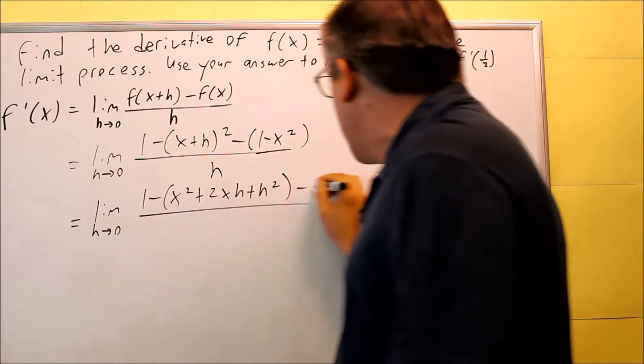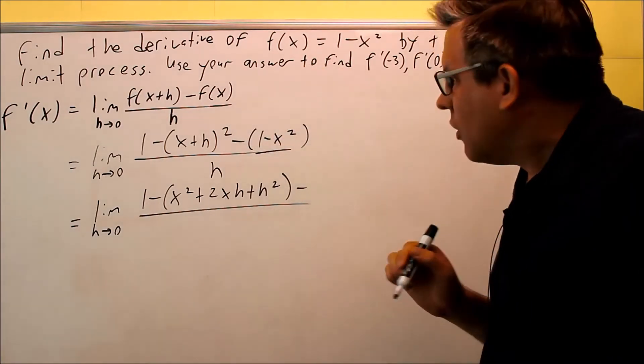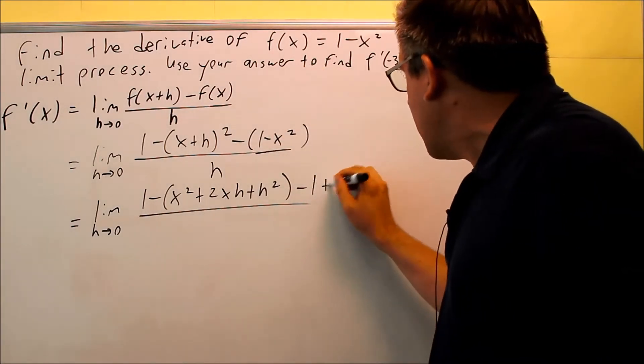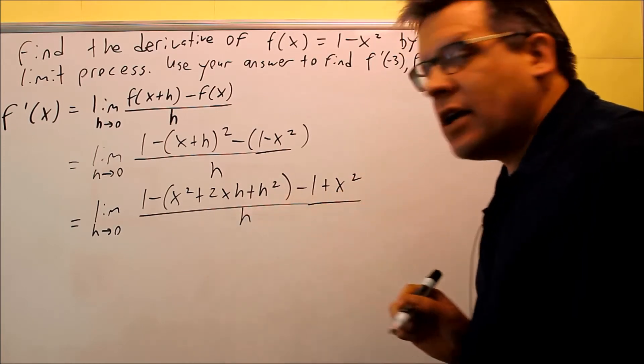x squared plus 2xh plus h squared. And then we're going to subtract this whole thing, so I'm going to distribute the minus sign for all those. So you get minus 1 plus x squared, and then we're dividing all this by h.